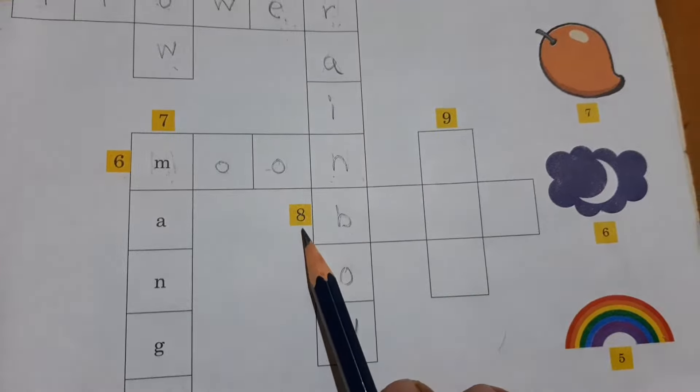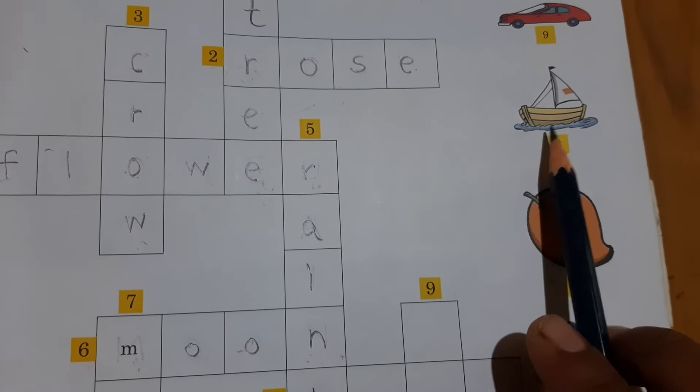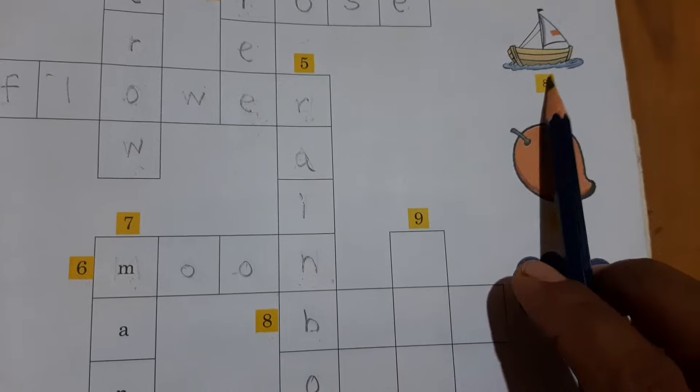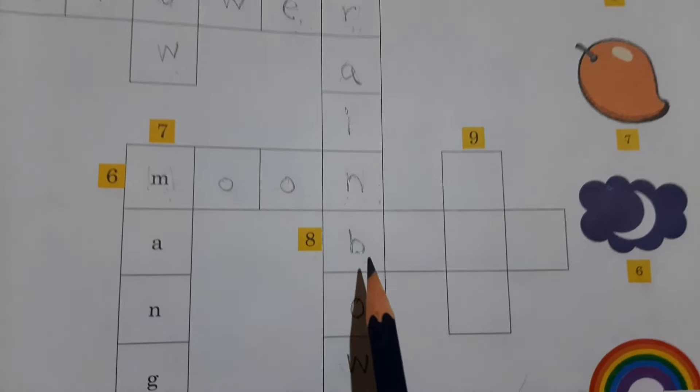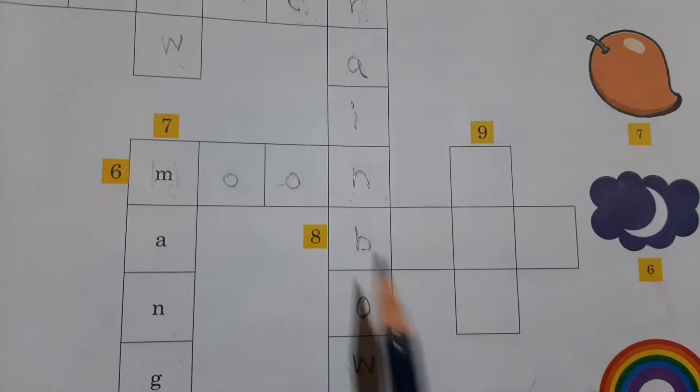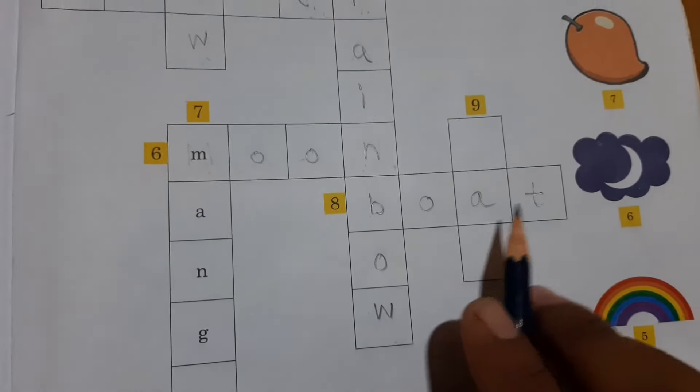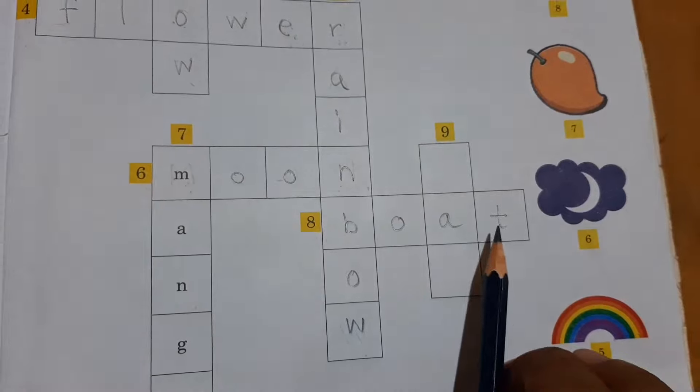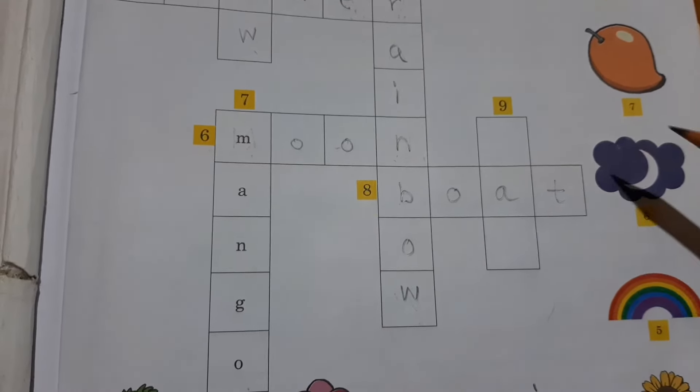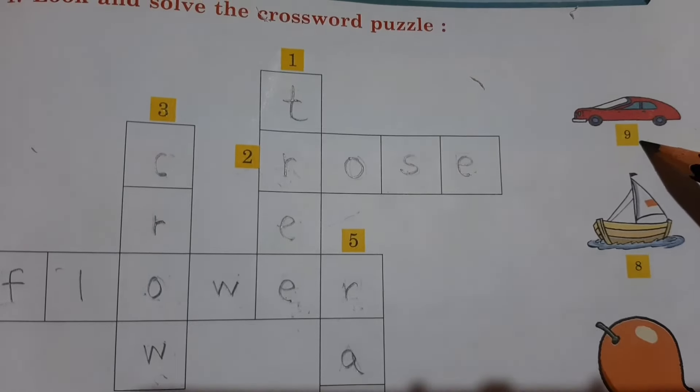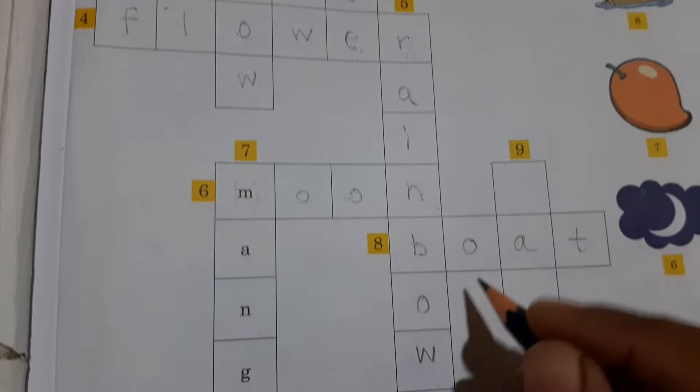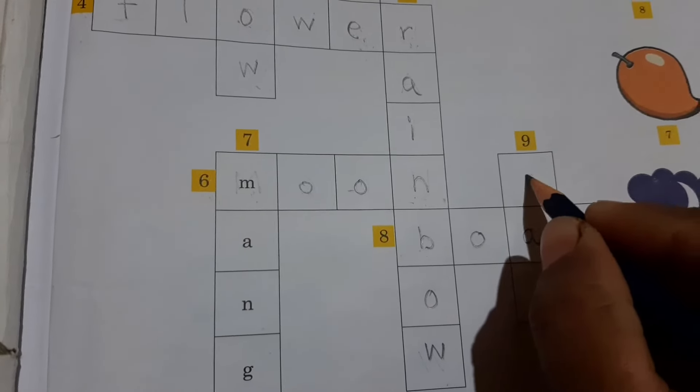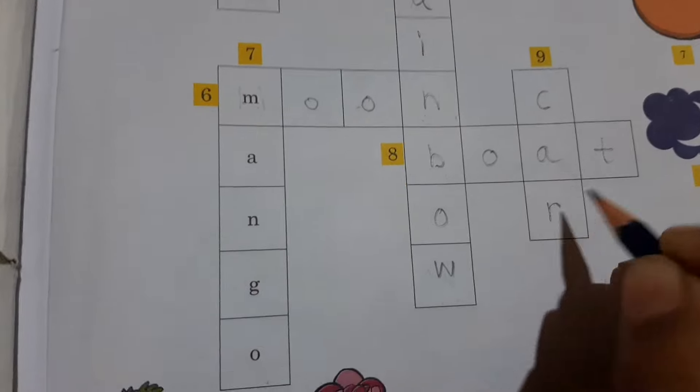Next picture is number 8. What can you see on number 8? What is this? This is a boat. See here, boat spelling is started with letter B: B-O-A-T, boat. Now last spelling is number 9. What is the picture on number 9? This is a car. What is the spelling of car? C-A-R, car.